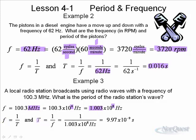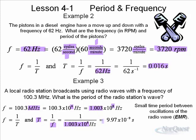So if that's the frequency, then, of course, the period is the inverse of the frequency, and it's 1 divided by 1.003 times 10 to the 8th, which is very, very small. Only 9.97 times 10 to the negative 9 seconds. And this is a small time period between oscillations of the radio wave, or the electromagnetic radiation.